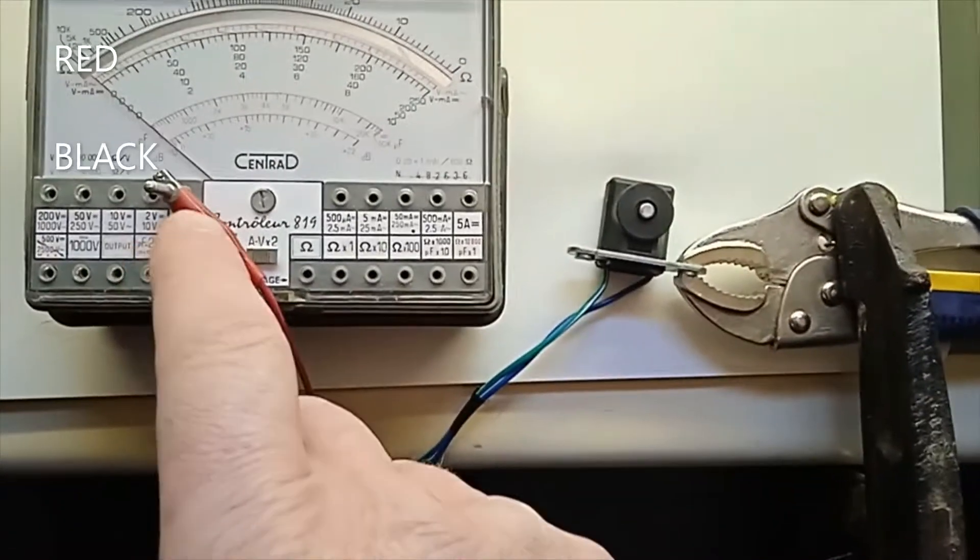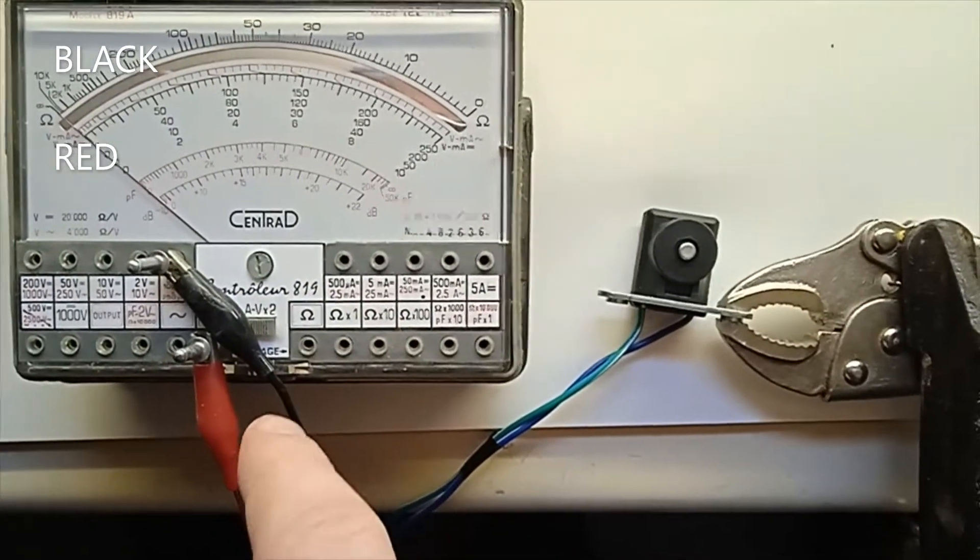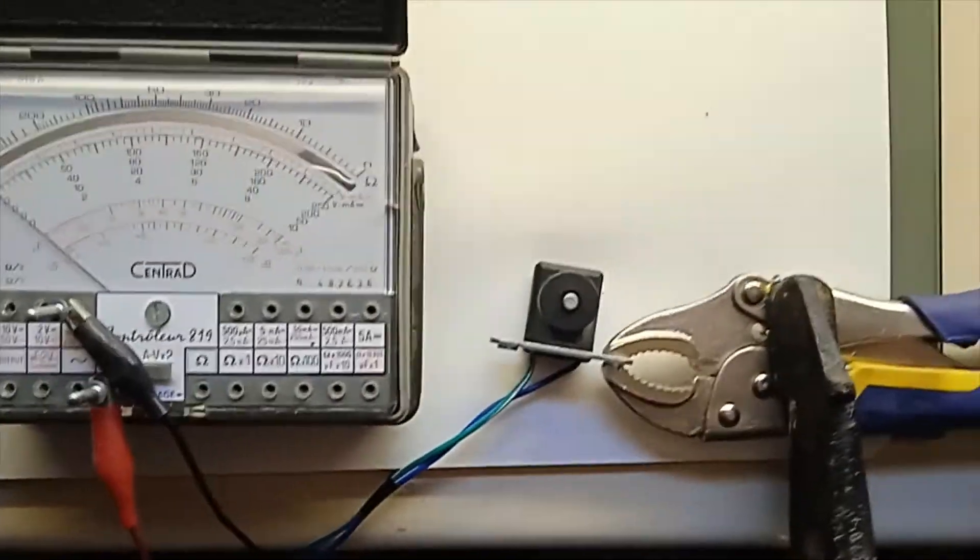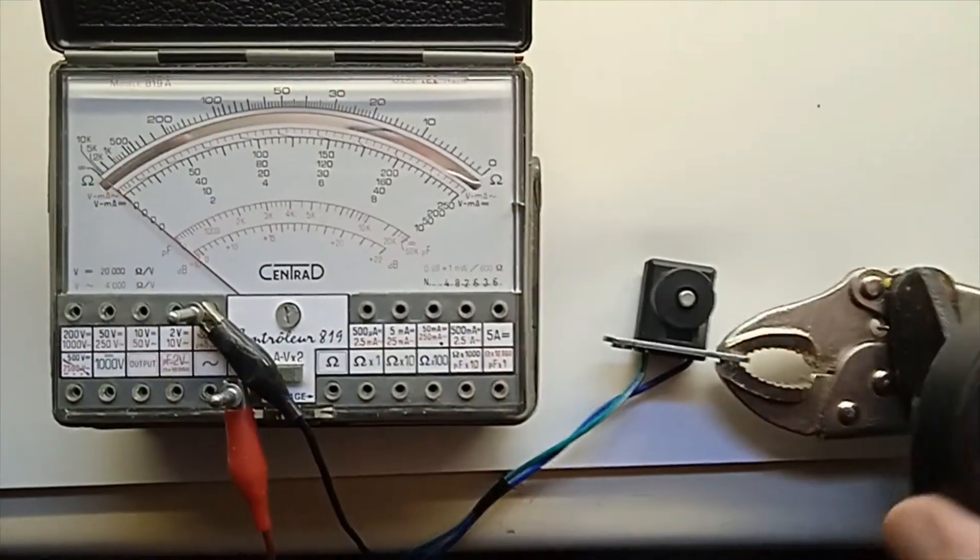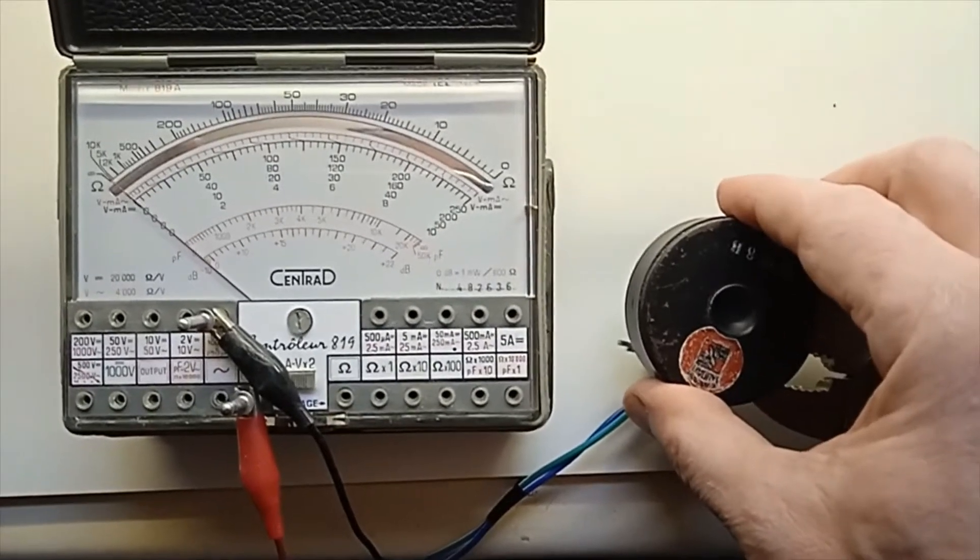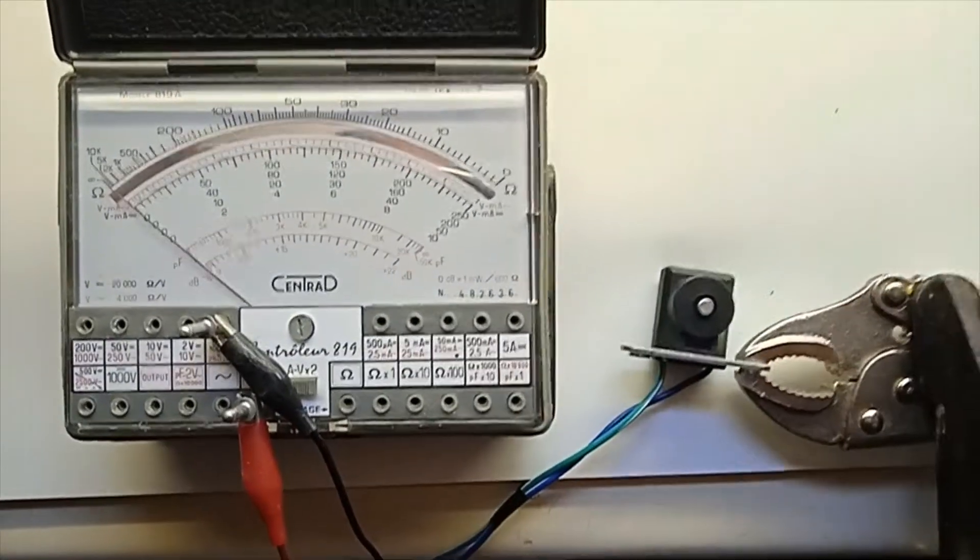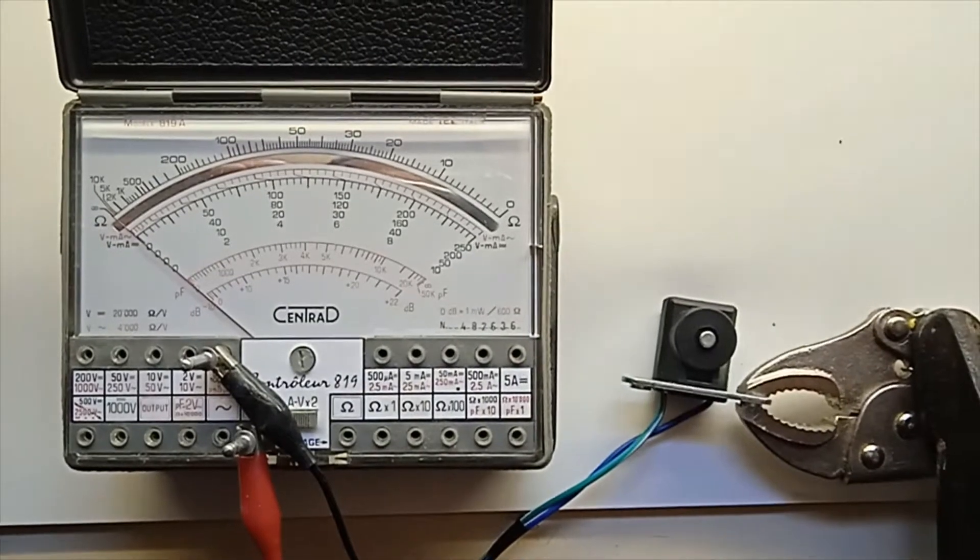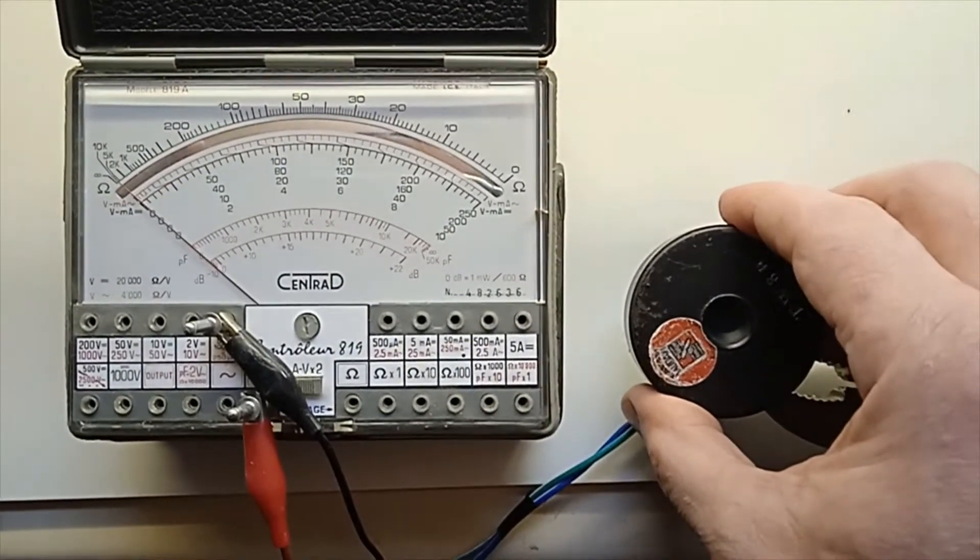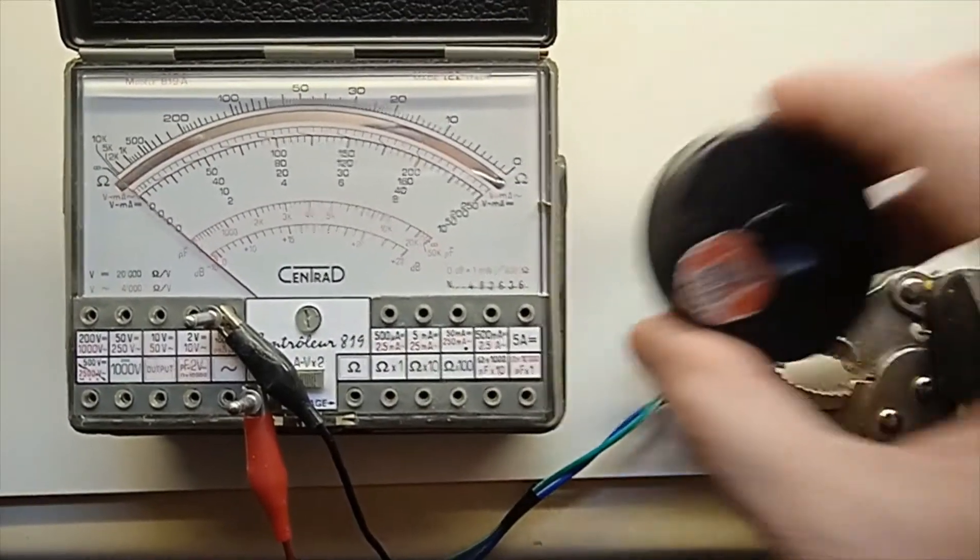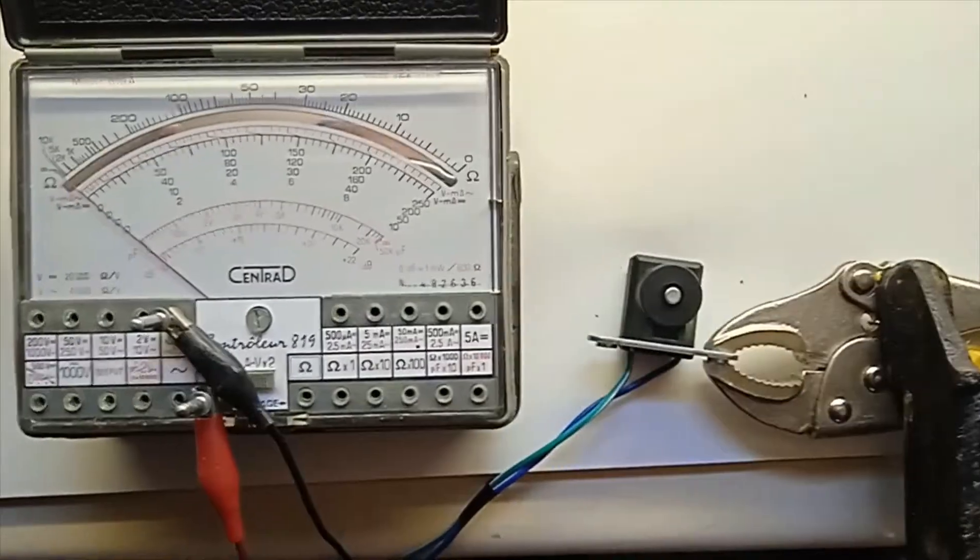Now I will reverse the two wires. Now the two wires have been reversed and when I approach the magnet to the pickup, notice where the needle goes. It goes positive, so positive first. And when I remove the magnet it goes negative. I will try faster. Okay, positive and negative, positive negative.